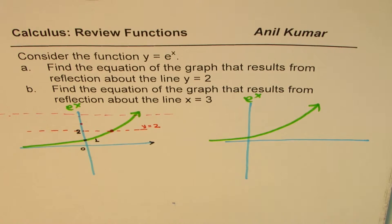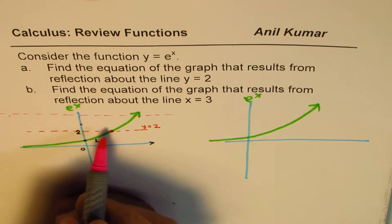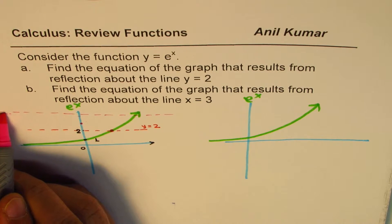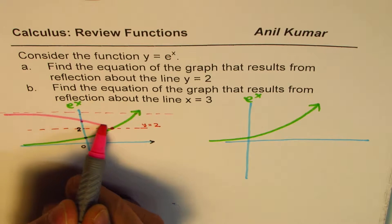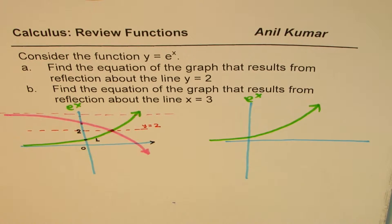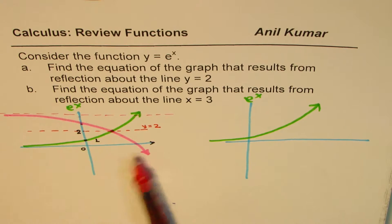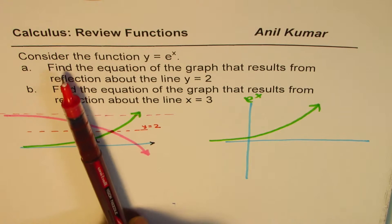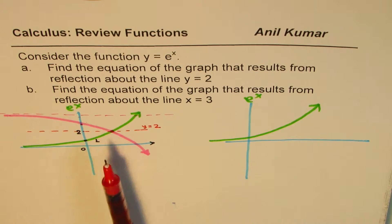So let me sketch this function slightly bold so that you can understand what we are trying to do. So it will be kind of like this. Do you see that? So that is how the function is going to look like. So this is the reflected function. The question here is, find the equation of this graph.